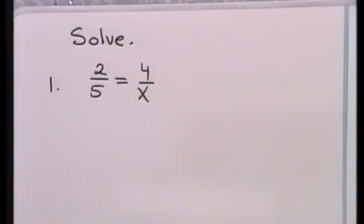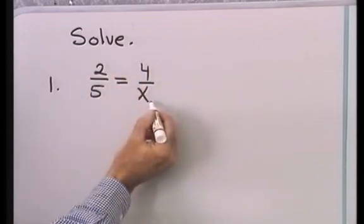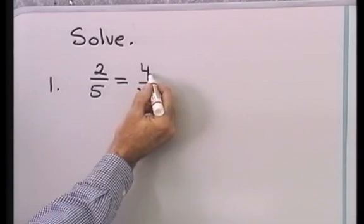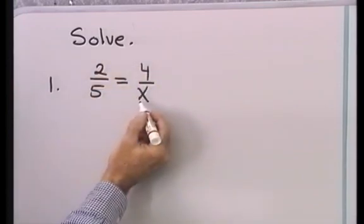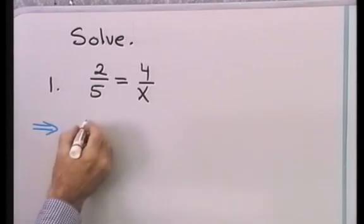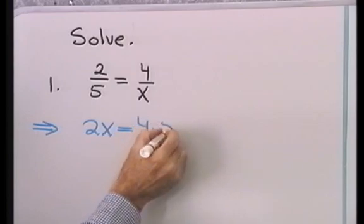Let's take a look. Problem number one, we want to solve 2/5 is equal to 4 over x. Remember the product of the means is equal to the product of the extremes. So, 2 times x and 5 times 4 are going to be equal. I use my means extremes property to write this as 2x is equal to 4 times 5.